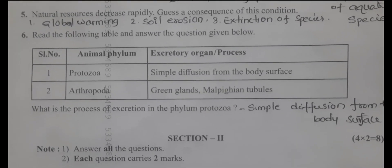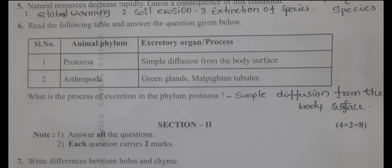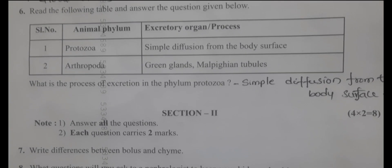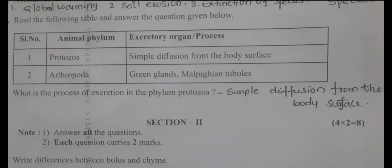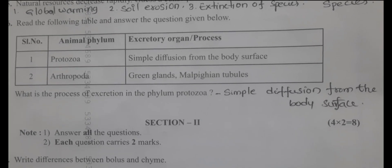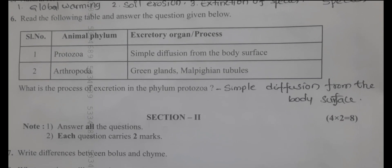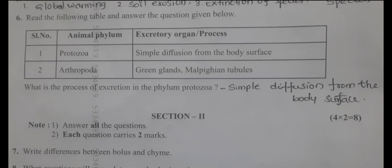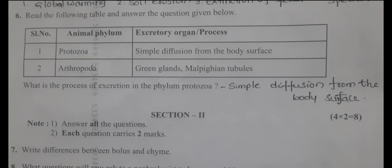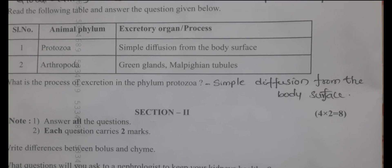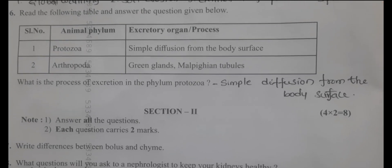Sixth question: read the following table and answer. The table shows serial numbers, animals, and excretory organs. The question asks: what is the process of excretion in the phylum Protozoa? The answer is simple diffusion from the body surface.